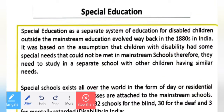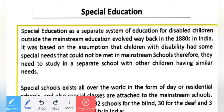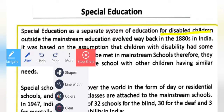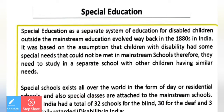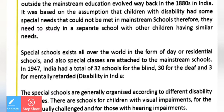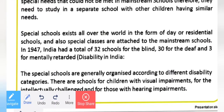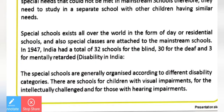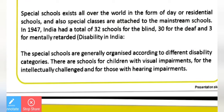That is called the mainstream. But special education is specifically for disabled children, and it started in the 1980s in India. The main purpose is to study disabled children and make separate schools for their needs. In India, until 1947, there were 32 schools for the blind, 30 schools for deaf persons, and 3 for mentally retarded disabilities.